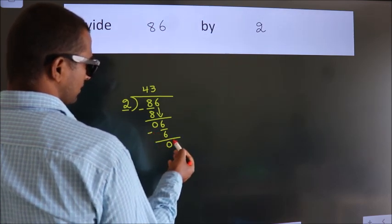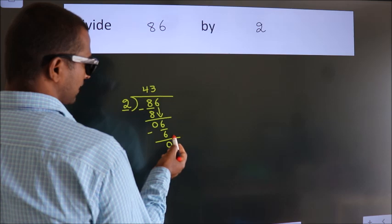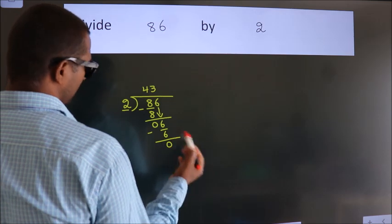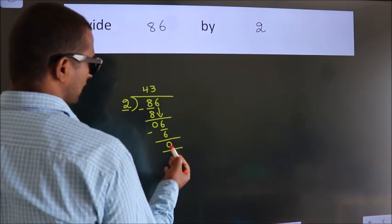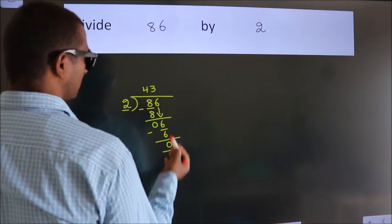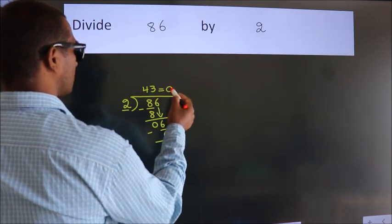After this, there are no more numbers to bring down. We got remainder 0. So this is our quotient.